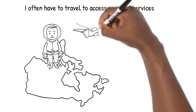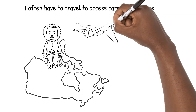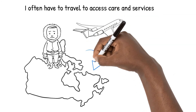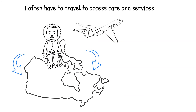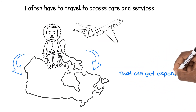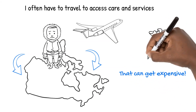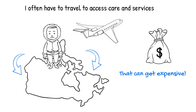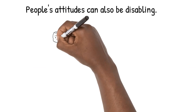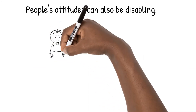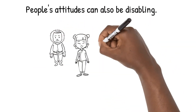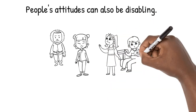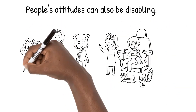An image of an Inuk person standing in northern Canada appears, with a plane and arrows pointing to the scene. I often have to travel to access care and services. An image of a bag of money appears. That can get expensive. Images of children appear. People's attitudes can also be disabling. We will not stay children forever. And we do not need fixing.